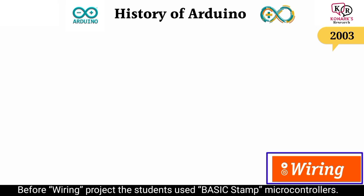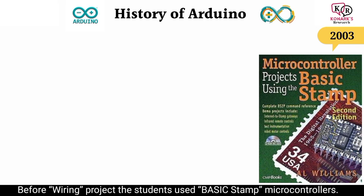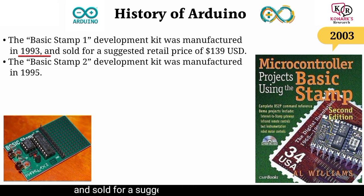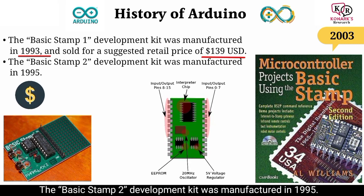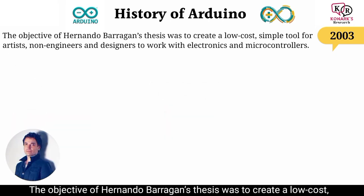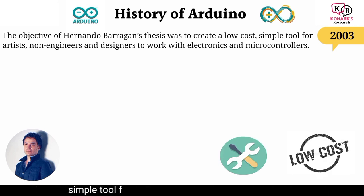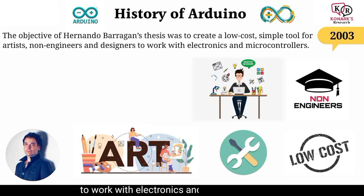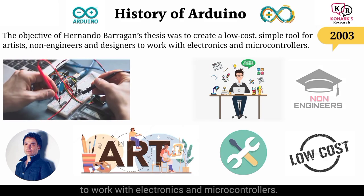Before the Wiring project, students used Basic Stamp microcontrollers. The Basic Stamp 1 development kit was manufactured in 1993 and sold for a suggested retail price of $139 US dollars. The Basic Stamp 2 development kit was manufactured in 1995. The objective of Hernando Barragan's thesis was to create a low-cost, simple tool for artists, non-engineers, and designers to work with electronics and microcontrollers.